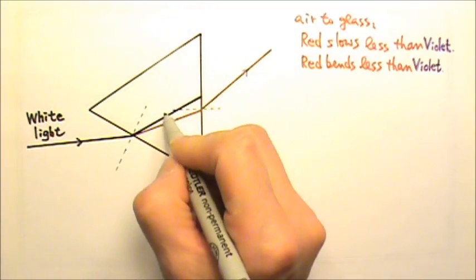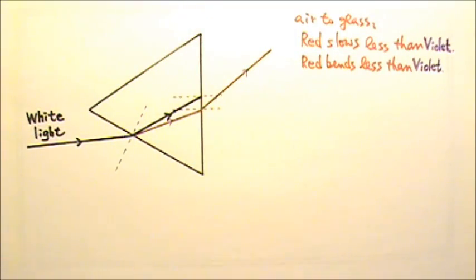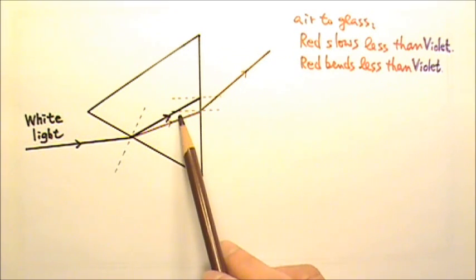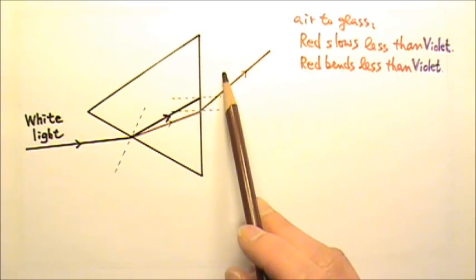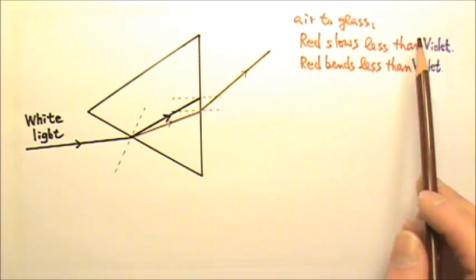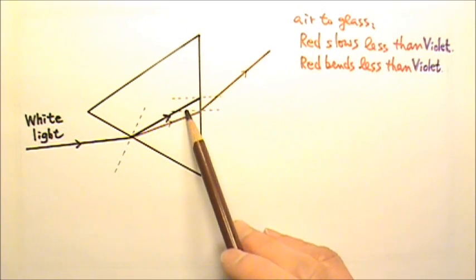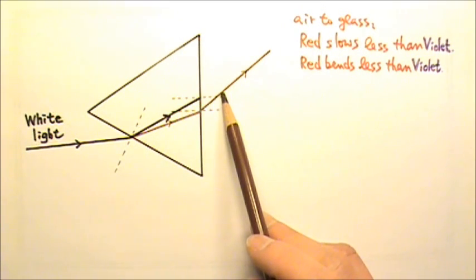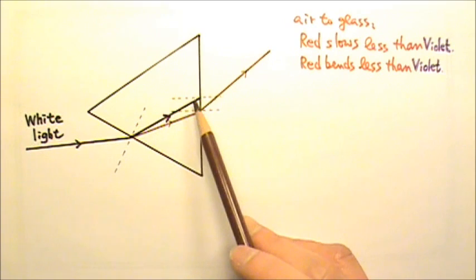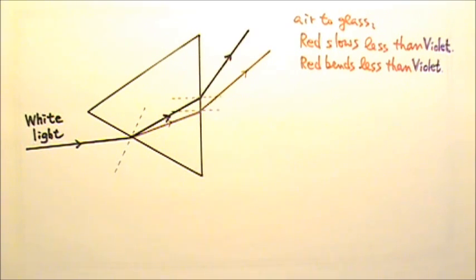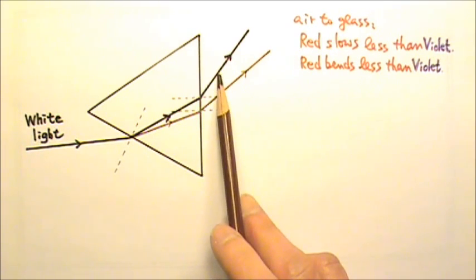Like this. Here I drew another normal line. When the violet ray comes out of the prism into air, it speeds up. Since violet ray has to speed up more than red so they can have the same speed again in air, violet ray encounters more speed change. Therefore, again violet light bends more.